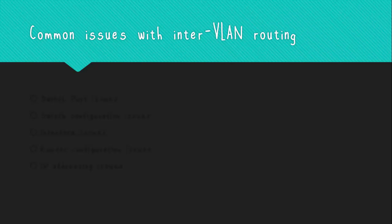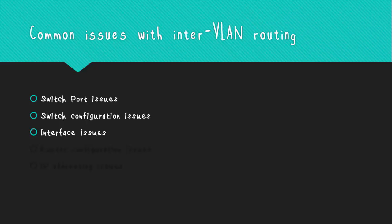Some of the most common issues with these two methods are switch port issues and switch port configuration issues, all related to switch configuration. If the proper VLAN is not assigned to the proper switch port, or the switch port is not in trunk mode, the router will not have access to all the VLANs created, resulting in traffic being dropped because it does not know a route to the destination. Router configuration issues are only present in the router on a stick method and occur when the wrong VLAN ID is issued using the 'encapsulation dot1q' command, making the router unable to operate because it is set to a different VLAN than the one it is receiving traffic from.